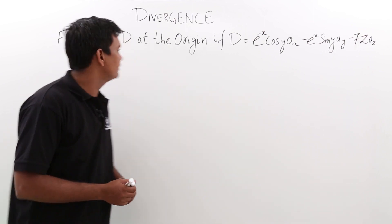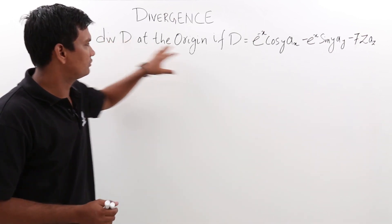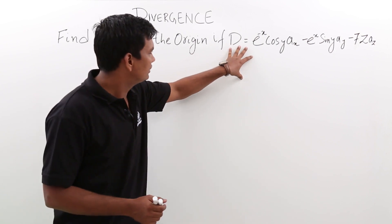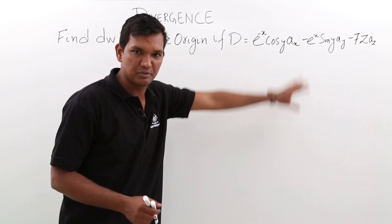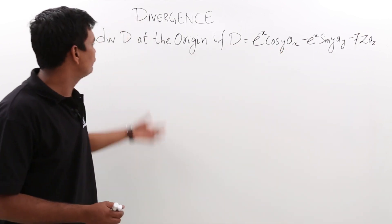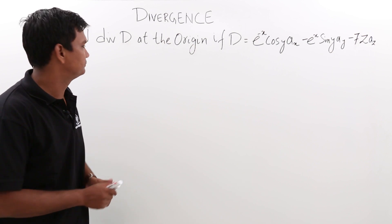In this problem, it is given that we have to find the divergence of the field D, which is given by a specific expression, and we have to find the divergence at the origin.